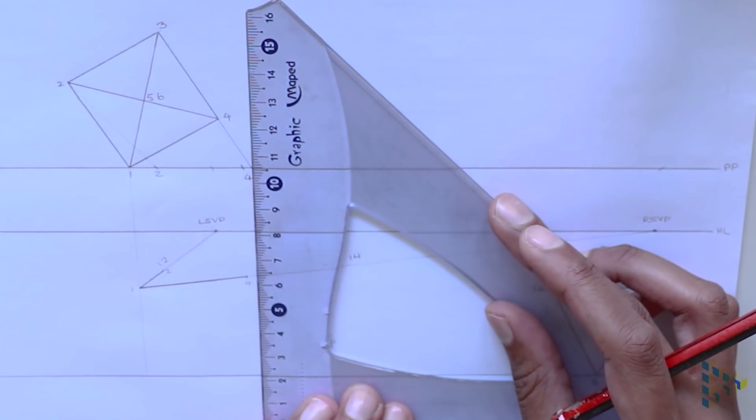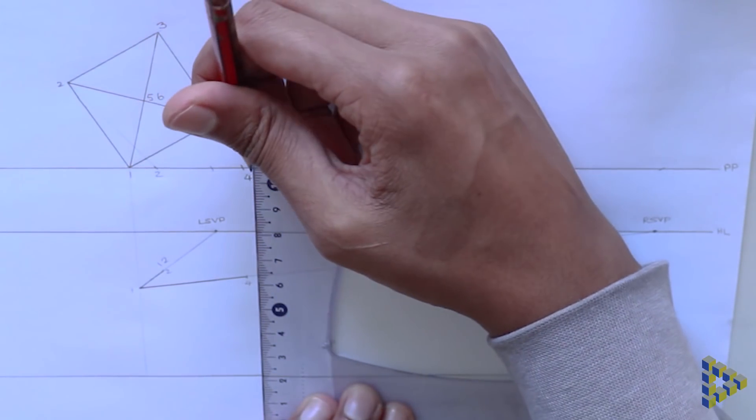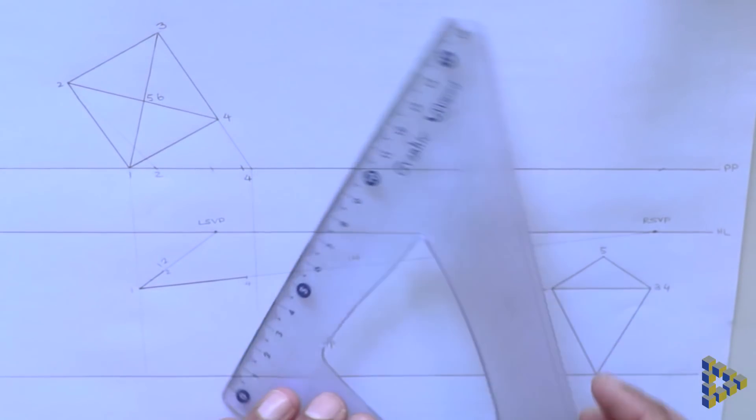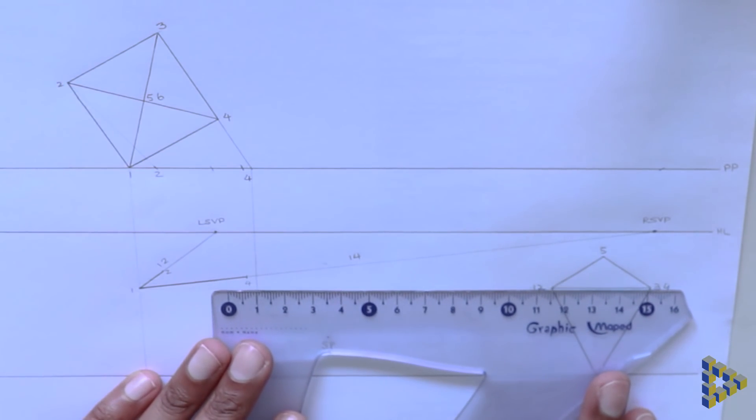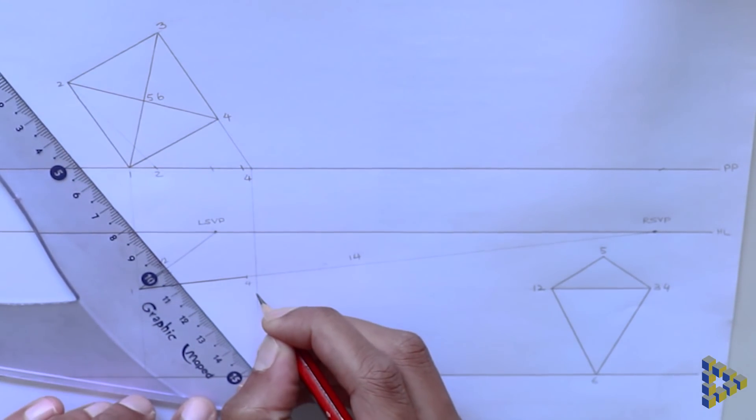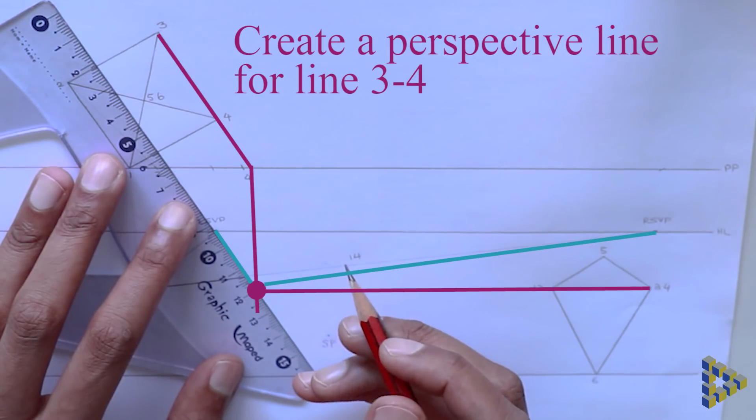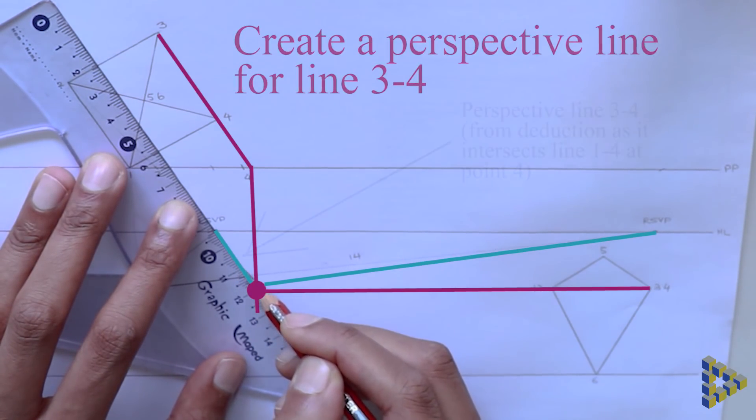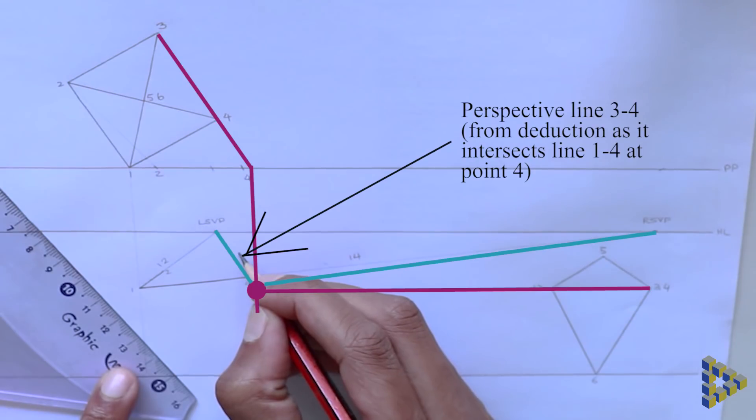Bring down this mark vertically, then project point three across from the side view. Where these construction lines intersect, make a mark. This mark should then be projected to your vanishing points. Now you have a perspective line for points three, four.